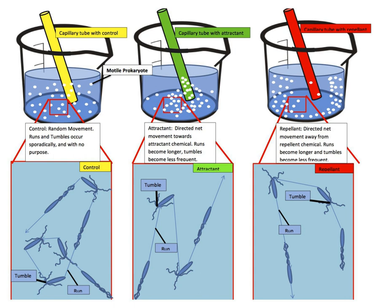Chemotaxis is the movement of an organism in response to a chemical stimulus. Somatic cells, bacteria, and other single-cell or multicellular organisms direct their movements according to certain chemicals in their environment.